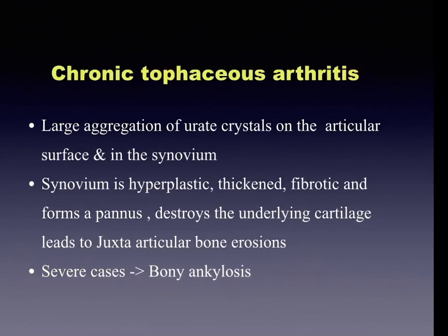Chronic tophaceous arthritis results from repetitive precipitation of monosodium urate crystals during acute attacks, with large aggregation of MSU crystals on the articular surface and in the synovium. This makes the synovium hyperplastic and thickened-fibrotic, forming a pannus that destroys the underlying cartilage, leading to juxtaarticular bony erosions. In severe cases, bony ankylosis can form.